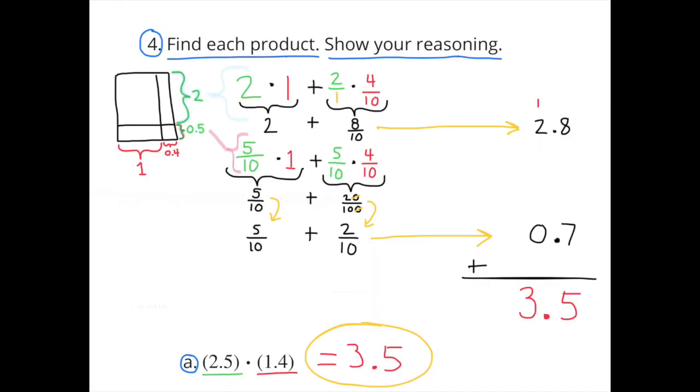Number 4. Find each product. Show your reasoning. A. 2.5 × 1.4. I drew a diagram to represent this. I have 4 sub-rectangles: one measuring 2 × 1.